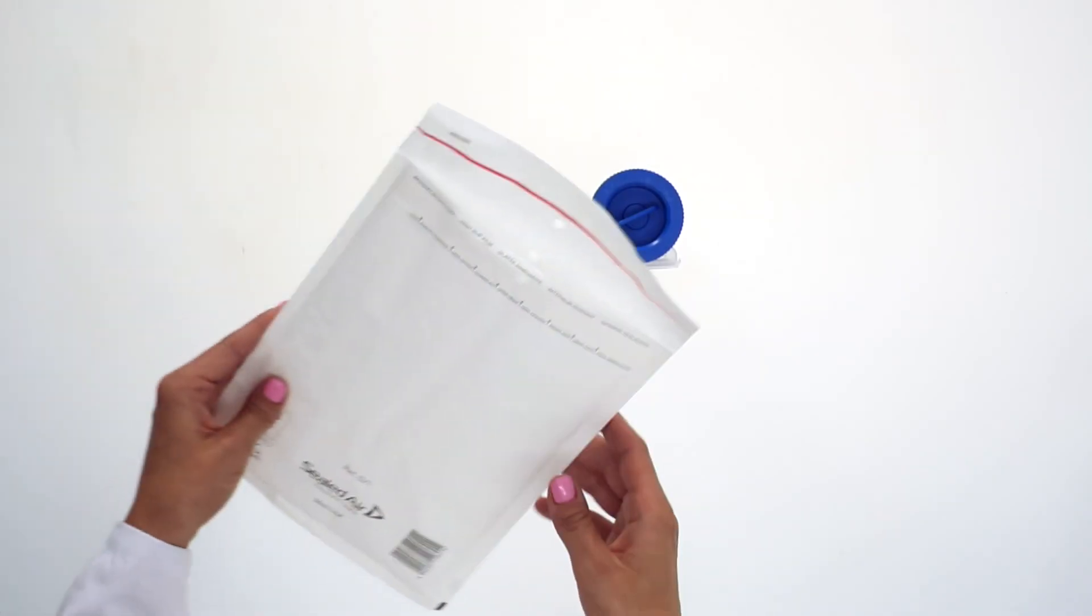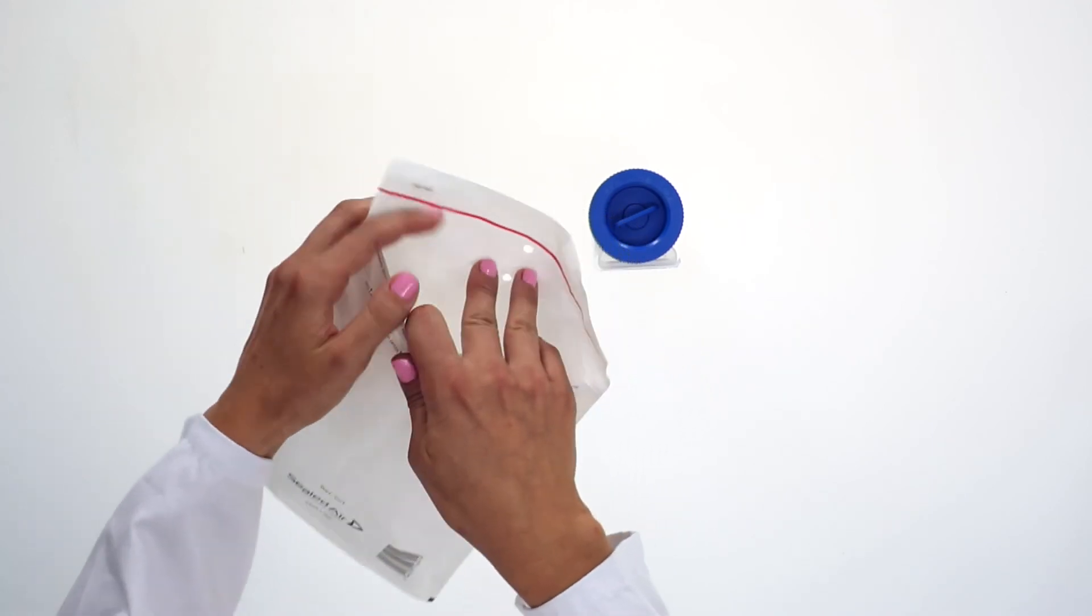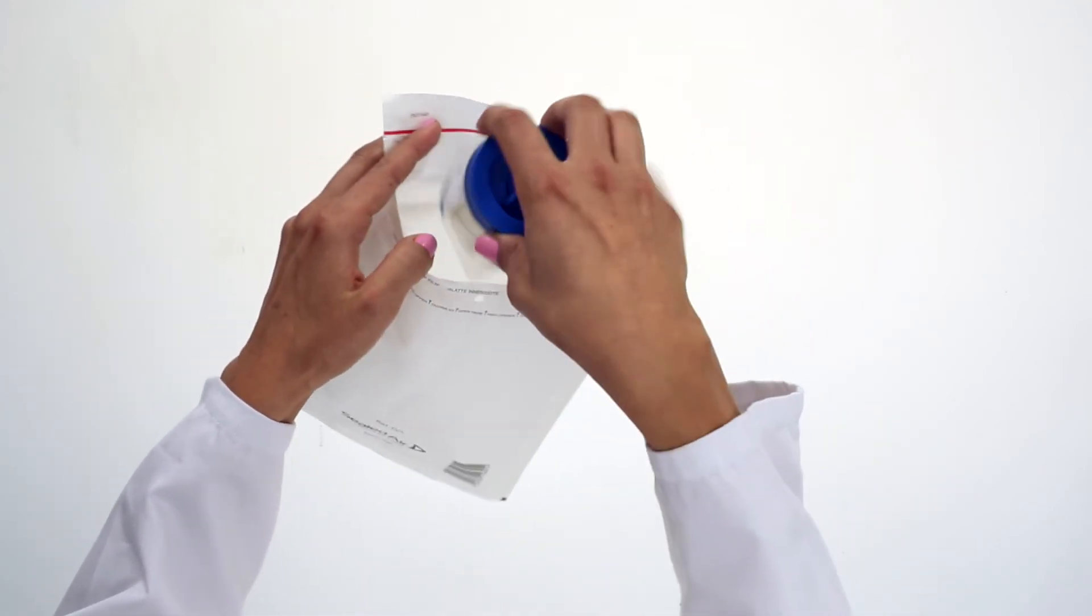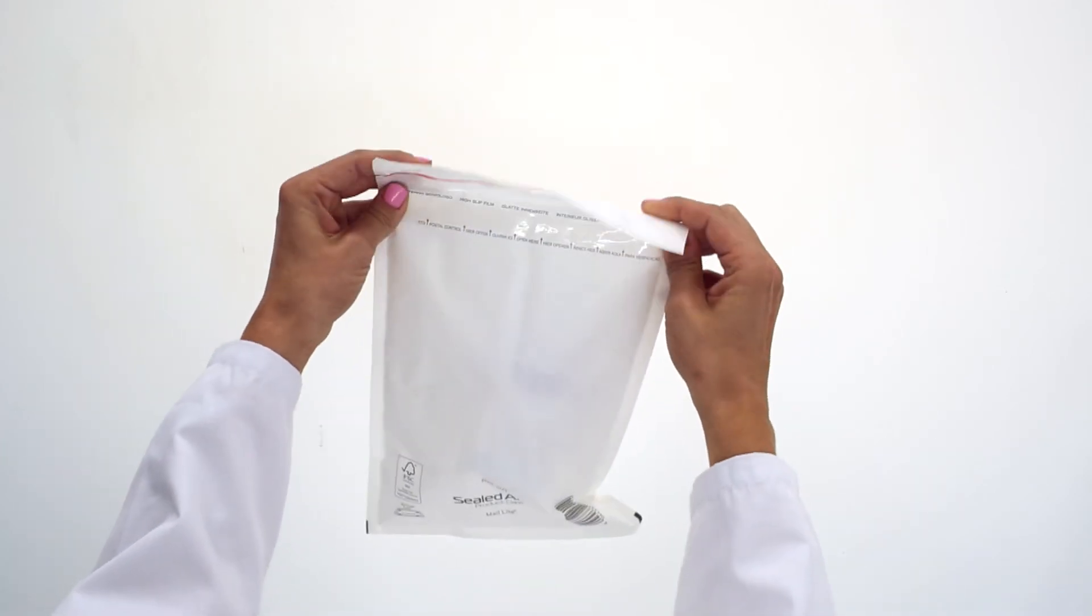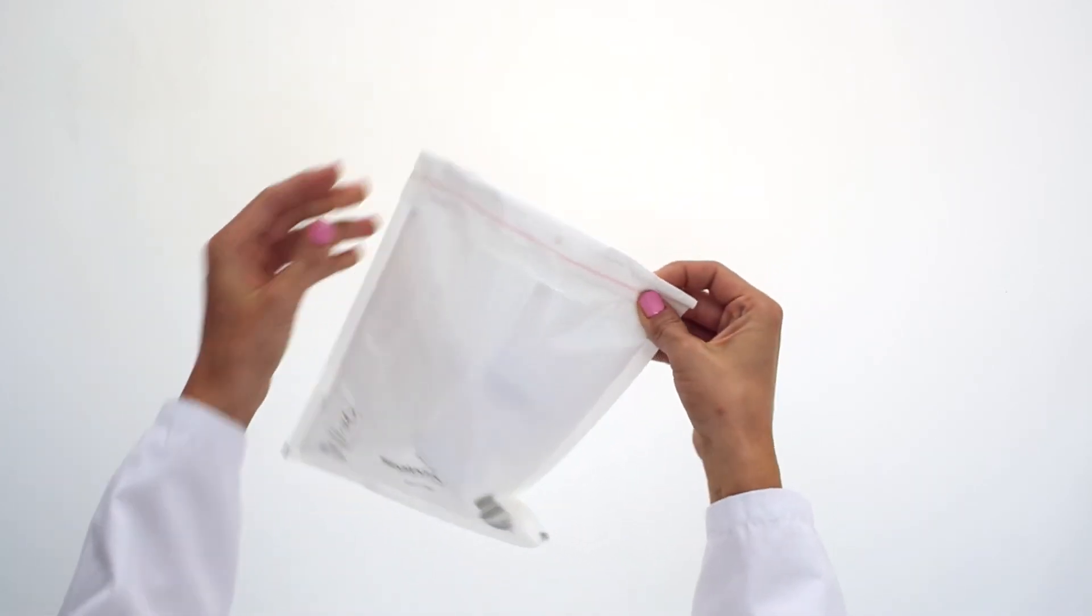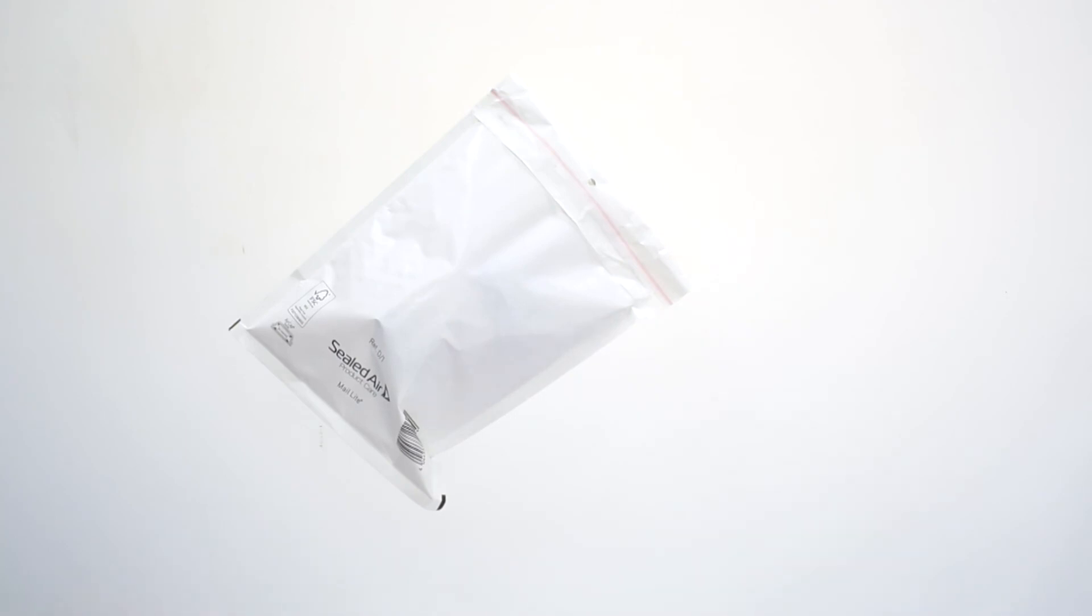In the event of a positive or borderline result, there is no need to pour the urine sample into a new container. You can use the Nahl von Minden drug screen cup itself as a transport container to send the specimen for confirmatory analysis.